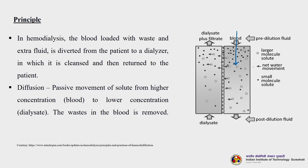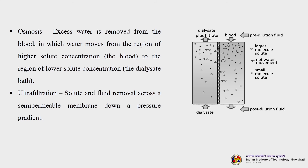In haemodialysis, blood loaded with waste and extra fluid is diverted from the patient to a dialyser where it is cleaned and returned. Diffusion — passive movement of solutes from higher concentration blood to lower concentration dialysate — removes wastes. Large molecular solutes are retained; small molecular solutes and net water movement pass through. Excess water is removed by osmosis (blood to dialysate bath). Ultrafiltration is used in the next step — solute and fluid removal across a semi-permeable membrane down a pressure gradient after passing through the dialysis membrane.